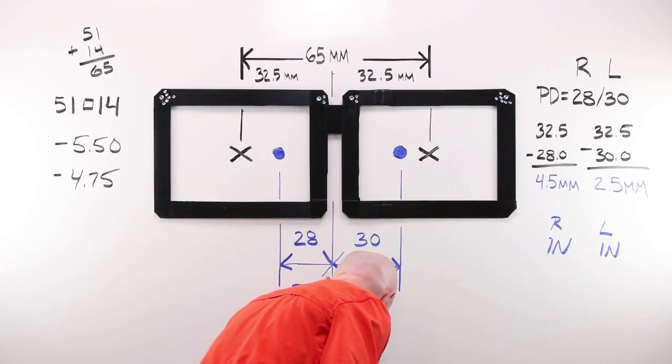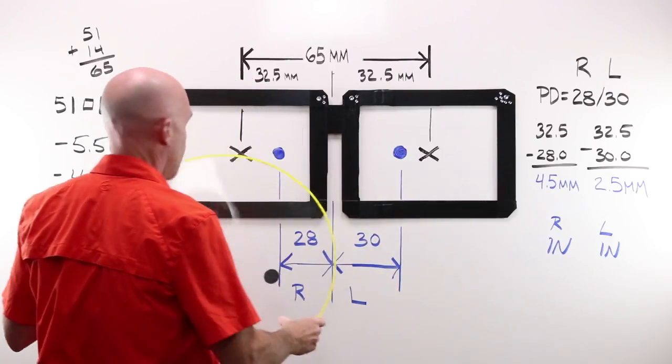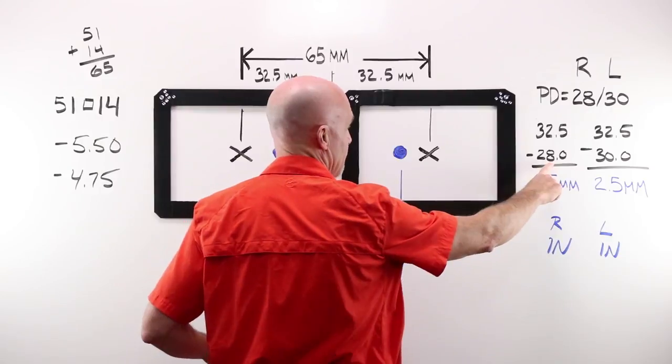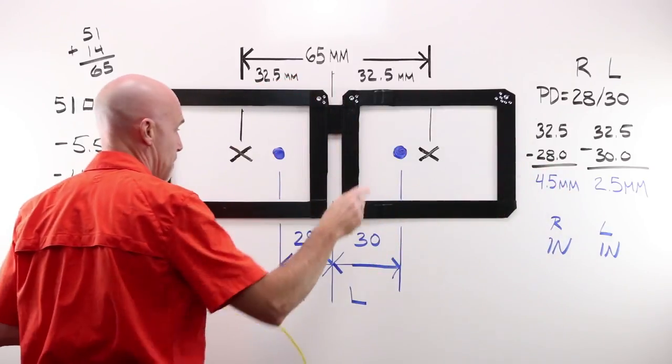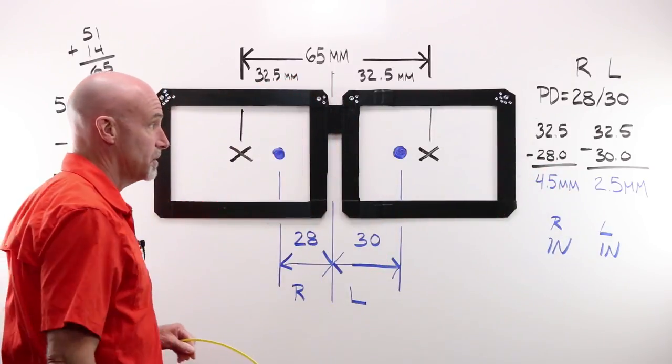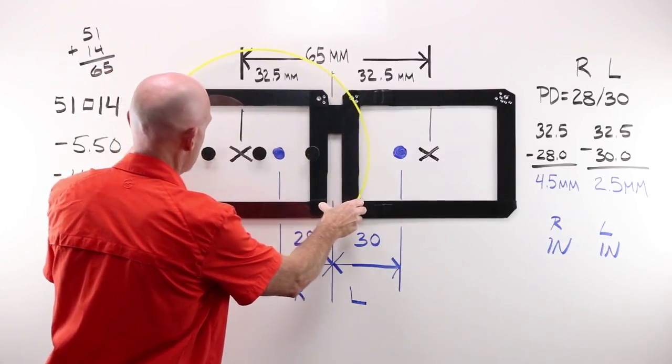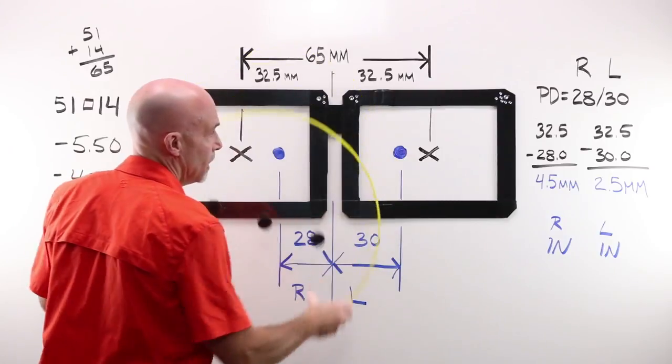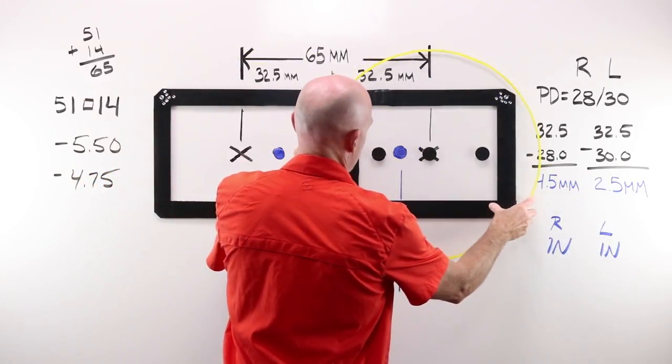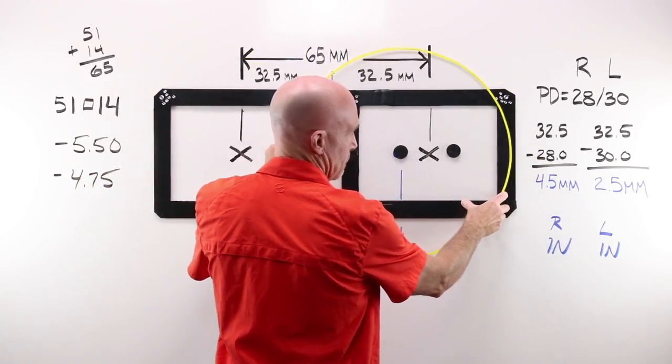When I have my 32 and a half and I take away my 28, I end up with a decentration amount that I need to move this OC, four and a half millimeters in the right, in, and two and a half millimeters in, in the left. Once I get over to the blocker, I would take my lens, and because 28 is narrower than 30 is, I'm going to have to displace or decenter this lens more. How much more? I need to move this one four and a half millimeters over. For my left, I only need to move it two and a half millimeters over.